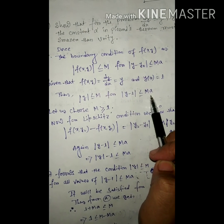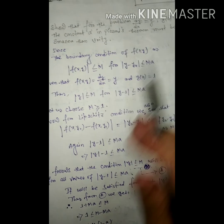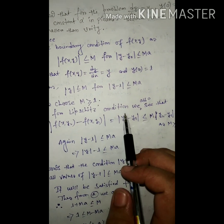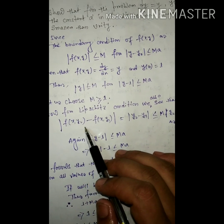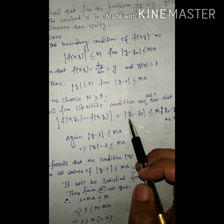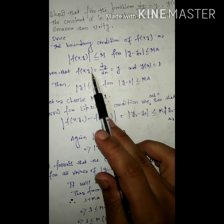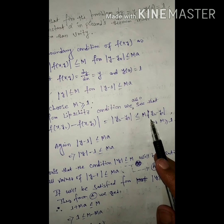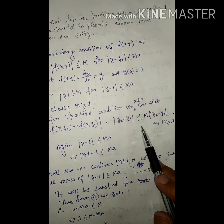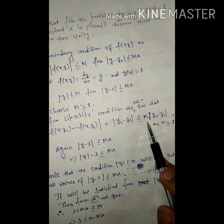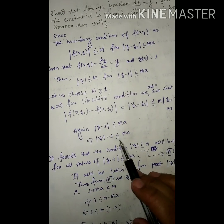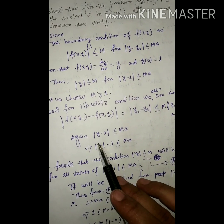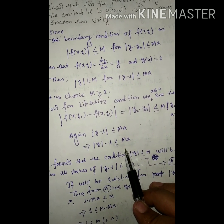For mod of y minus 1 ≤ M, since y₀ = 1, let us choose M ≥ 1. Now for the Lipschitz condition we also see that mod of f(x, y₂) minus f(x, y₁) equals y₂ minus y₁, since f(x,y) = y, which is ≤ M · mod of y₂ minus y₁, and from here we get M ≥ 1.